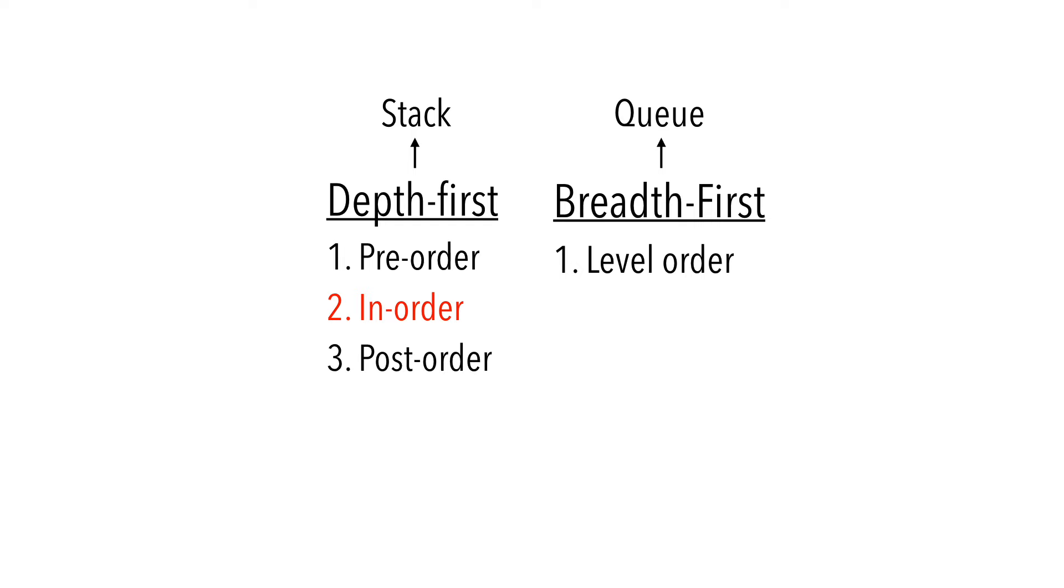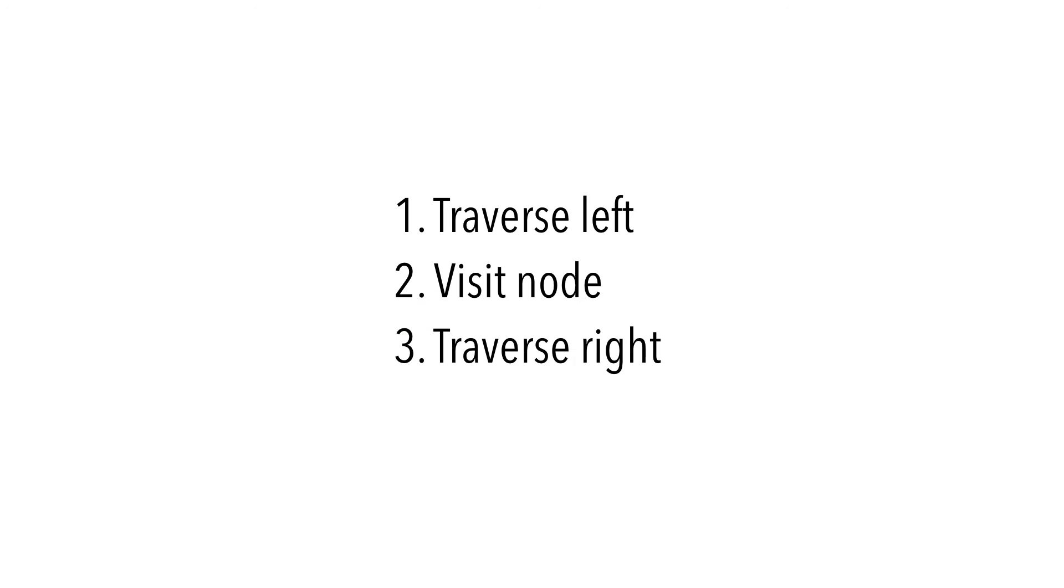In-Order Tree Traversal is outlined by three steps. First, we traverse the left subtree. Next, we visit the node. Finally, we traverse the right subtree.